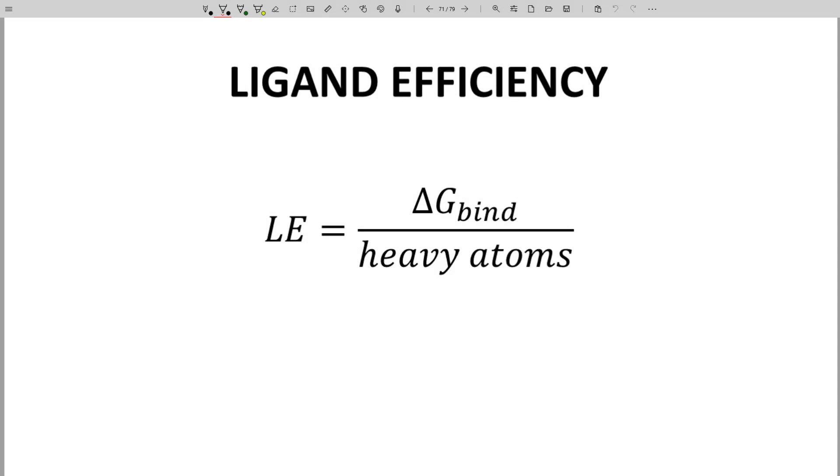As potency rises, so does molecular weight. But we know that molecular weight shouldn't get too high according to Lipinski's rules. How can we judge whether a gain in potency is worth the added molecular weight?